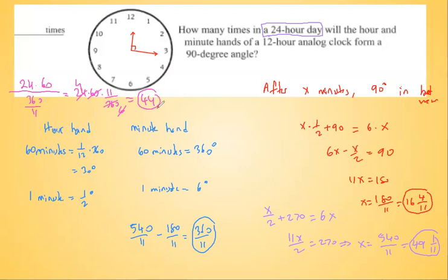We get a whole number, which is reassuring — no rounding concerns. So the answer is 44 times the hands form a 90-degree angle between the hour hand and minute hand in a 24-hour period. I'll see you in the next video.